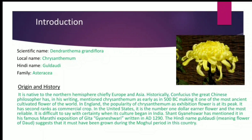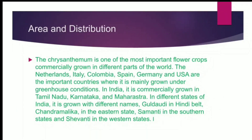In England, the popularity of Chrysanthemum as an exhibition flower is at its peak, and it has second rank as a commercial crop. In the United States, it is the number one dollar-earner flower. It is difficult to say with certainty when its culture began in India. Sant Gyaneshwar mentioned it in his famous Marathi exposition of Gita, the Gyaneshwari, written in AD 1290. The Hindi name Guldaudi, meaning flower of Daud, suggests it must have been grown during the Mughal period.